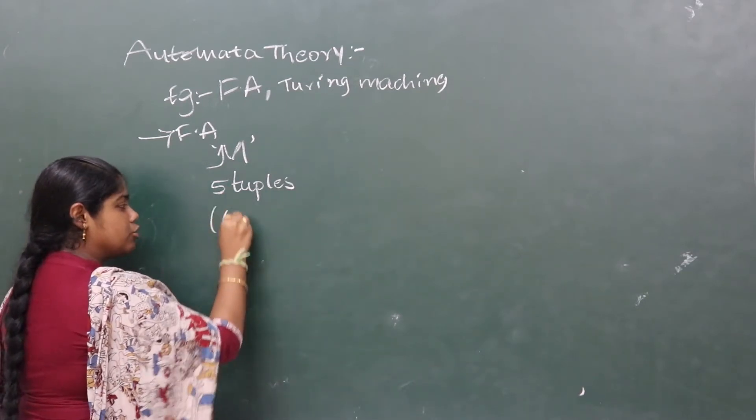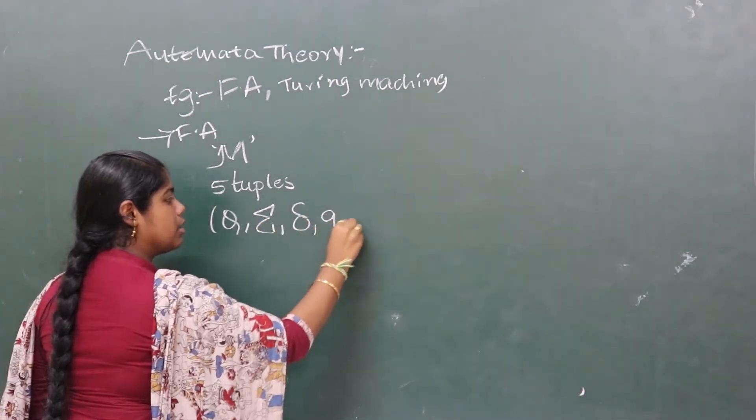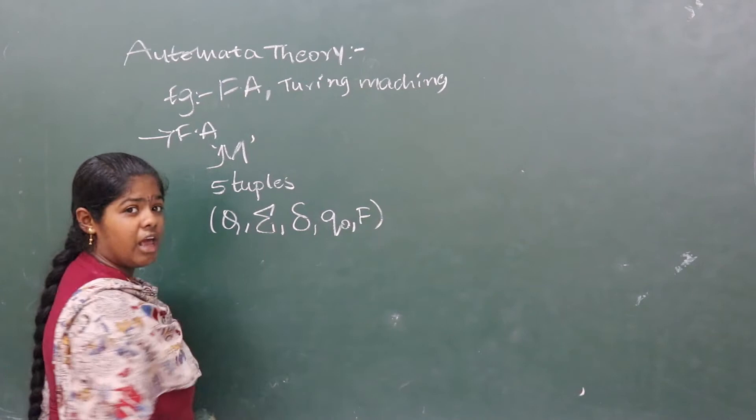What are those five attributes? That means Q, sigma, delta, Q0 and F.